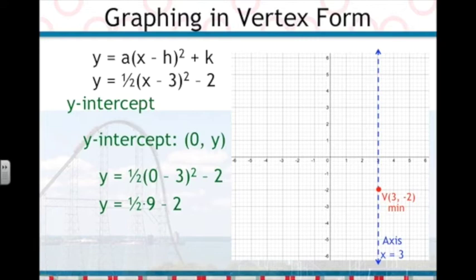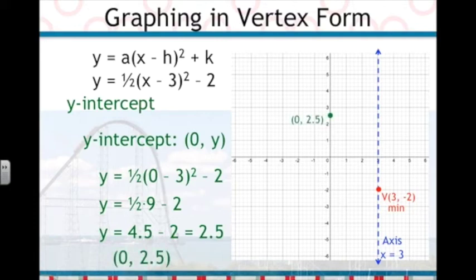1 half of 9 is 4 and a half, so now we have 4 and a half minus 2, which is 2 and a half, giving us the point 0, 2 and a half, as the y-intercept. So we plot that point on the graph.